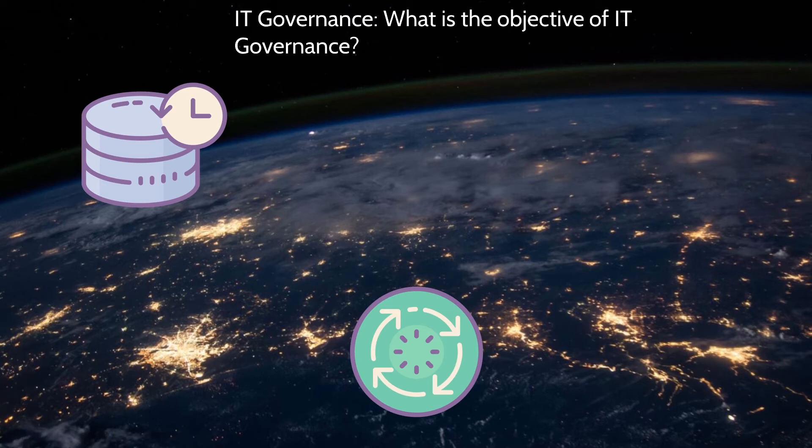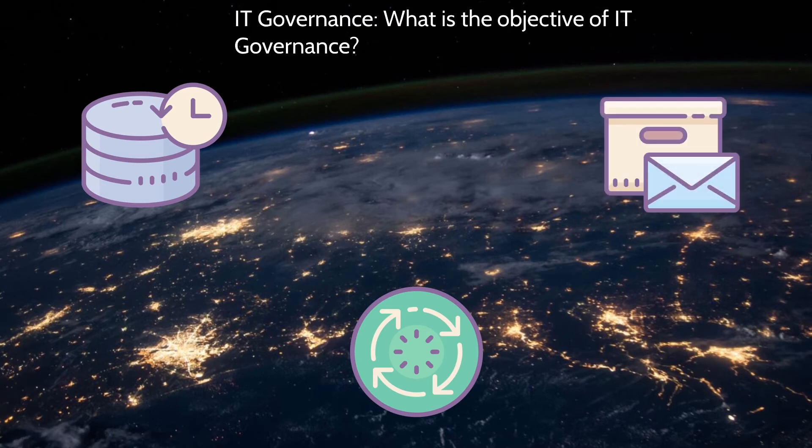Once defined, the governance model will deliver the control, alignment, accountability, transparency, and compliance results desired by organisation, actions, and behaviour to make sure you live your values, focus on your strategy, and align with your purpose.